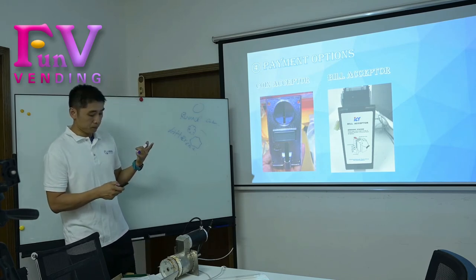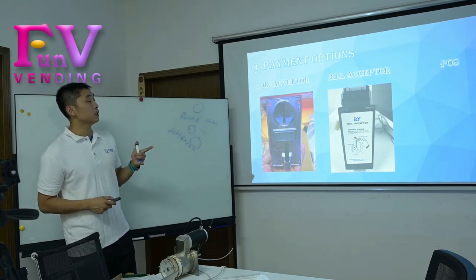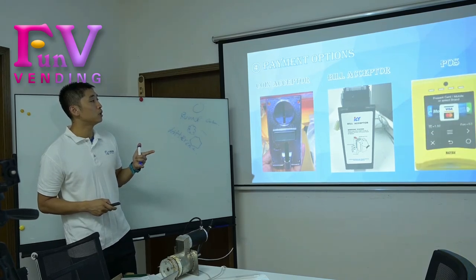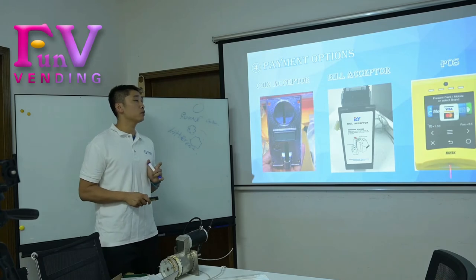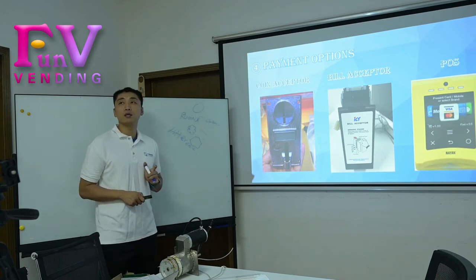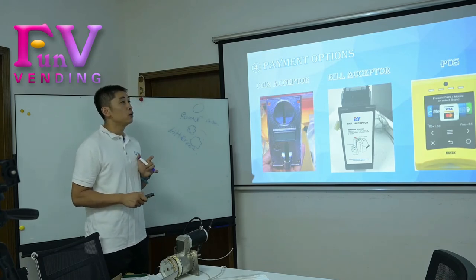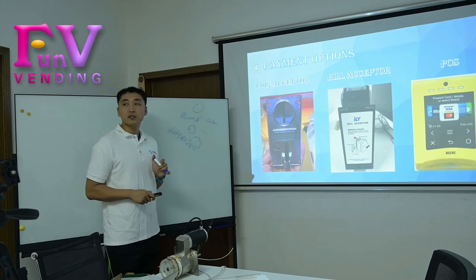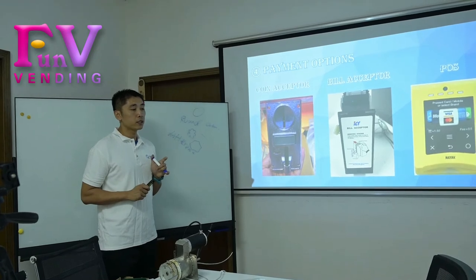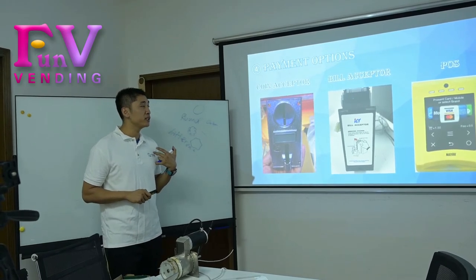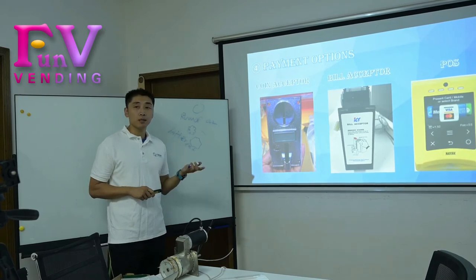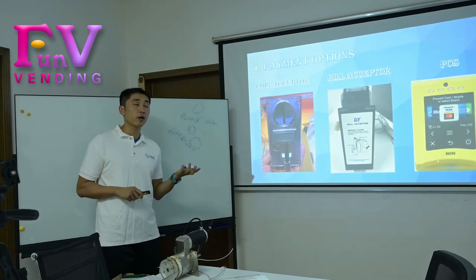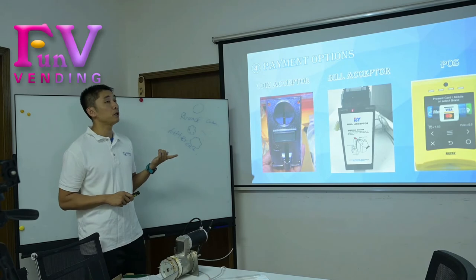The next one is the card reader. This one — when we do the promotion about the candy cotton machine, maybe 90% of customers will ask about this one. Because, from my experience in USA, they do like the credit card payment or the debit card payment, and bill acceptor.